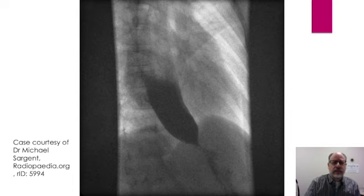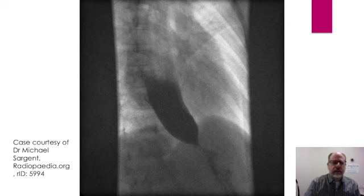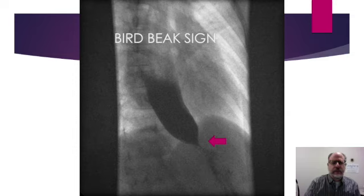This is an image from an esophagram utilizing barium. You can see that the esophagus is dilated. In the lower aspect of the image, the dilated esophagus tapers abruptly to a sharp point or beak at the gastroesophageal junction. This is termed the bird beak sign. The arrow indicates the area of beaking or tapering at the lower esophageal sphincter.